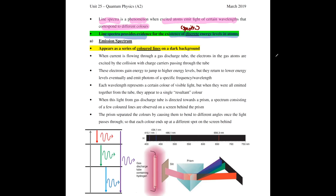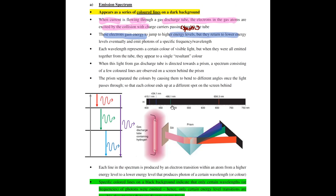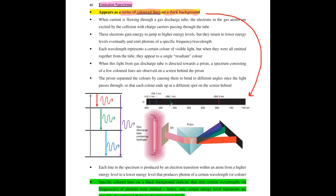Line spectra can be divided into two types: emission spectra and absorption spectra. The most common one you tend to go through first is the emission spectrum. Emission spectrum appears as a series of colored lines on a dark background — that is referring to the diagram where you see a dark background with a few colored lines.